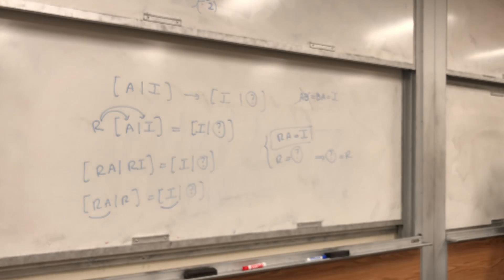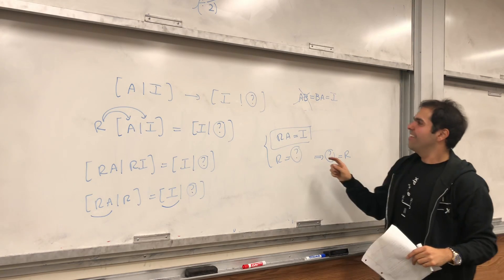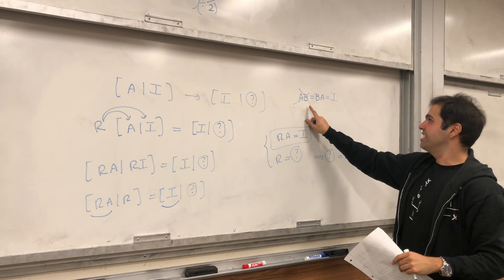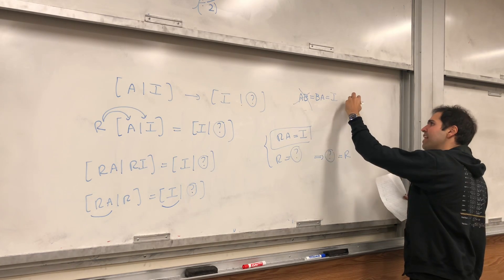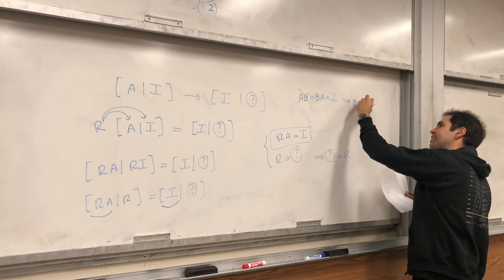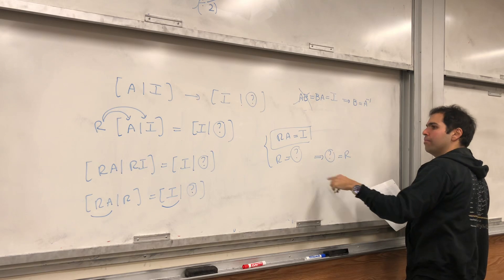you just need one of those conditions. So, in particular, we just need one of those conditions. In particular, if BA is the identity, already you can say that B is A inverse. But look,